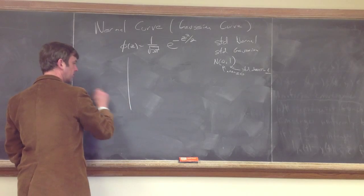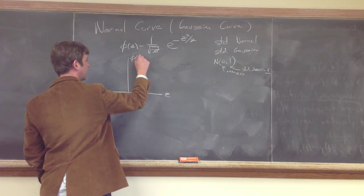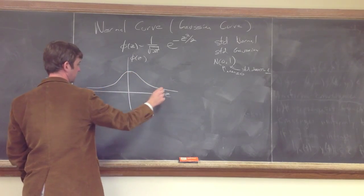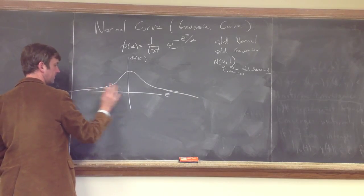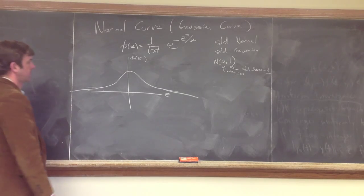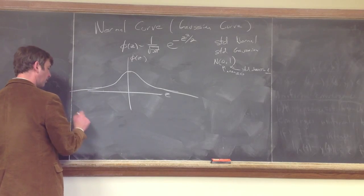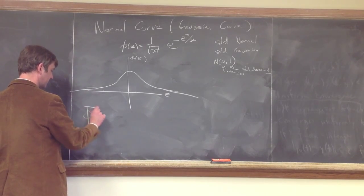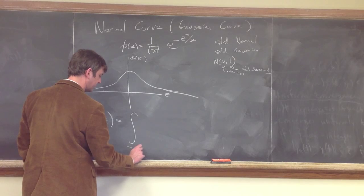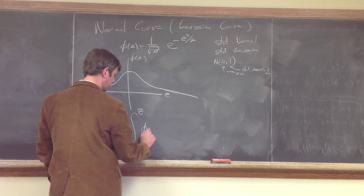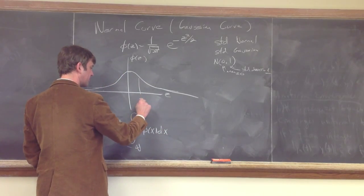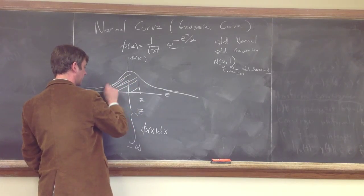If you plot this — plotting z and phi of z against it — it looks like a bell curve that runs off down to infinity in both directions. We then define the normal cumulative density function, which we'll call capital Phi, as the integral from minus infinity to z of little phi of x dx. So if you pick a z, capital Phi of z is all of the area under the curve up to that point.